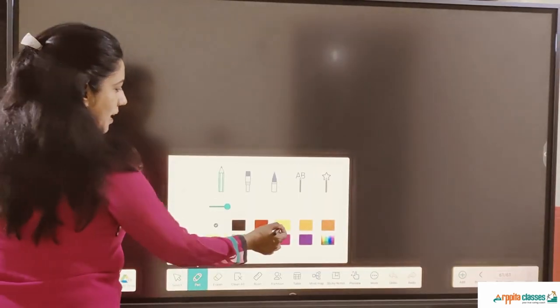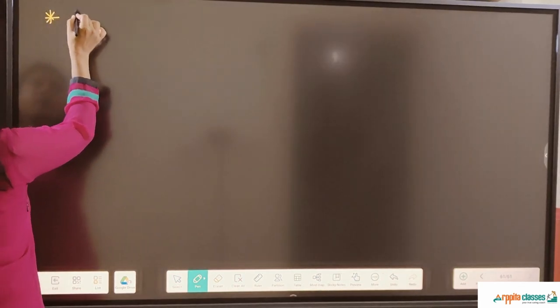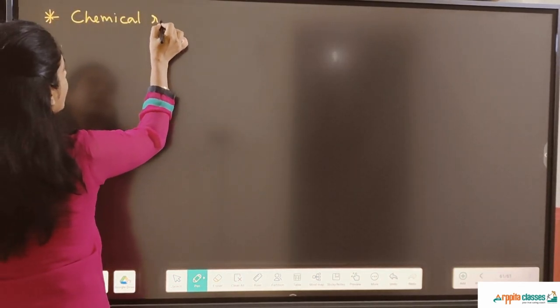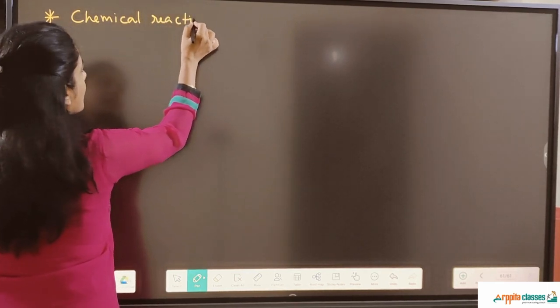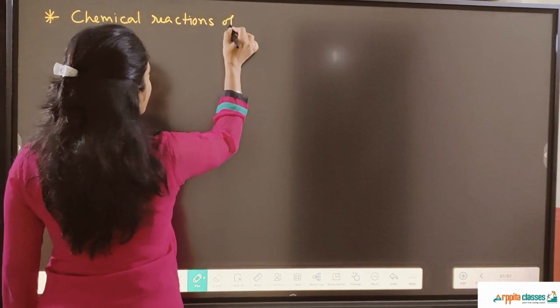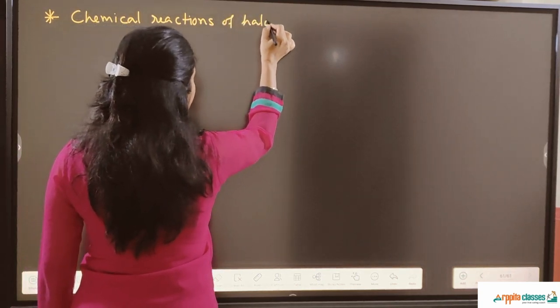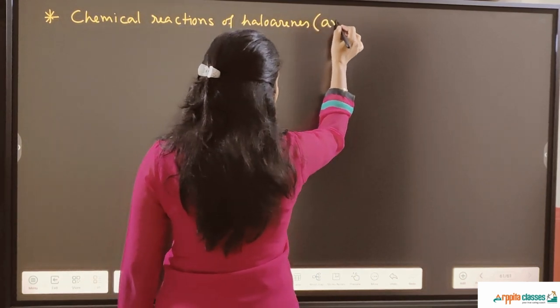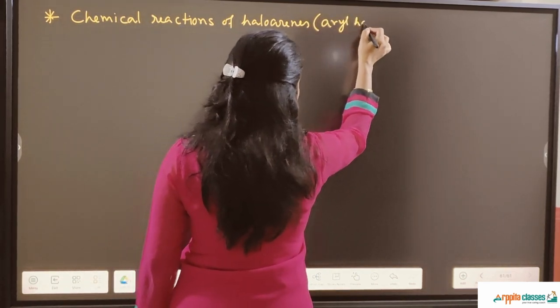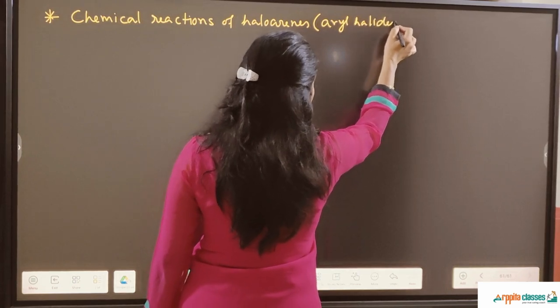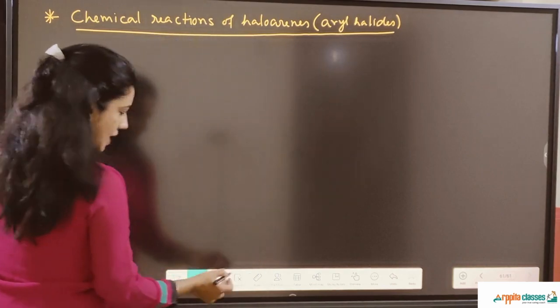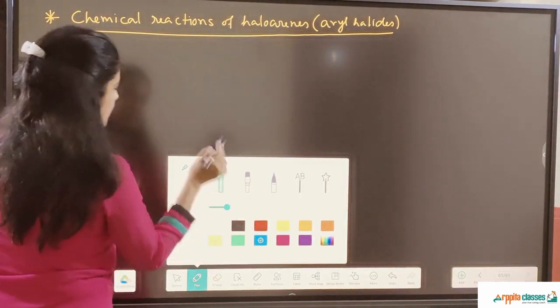So today we are going to discuss the chemical reactions of haloarenes. The other name for haloarenes are aryl halides. So here we are going to discuss the electrophilic substitution reaction.